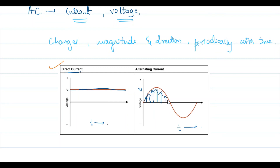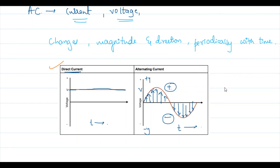In AC, the direction is also changing. Here it is on the positive axis and here it is now negative. With respect to voltage, this is the positive y-axis and this is the negative y-axis. It is acquiring positive and negative values, so its direction is changing every time. After one period it changes — the same thing happens in the first half cycle and second half cycle. That is what we call periodically.